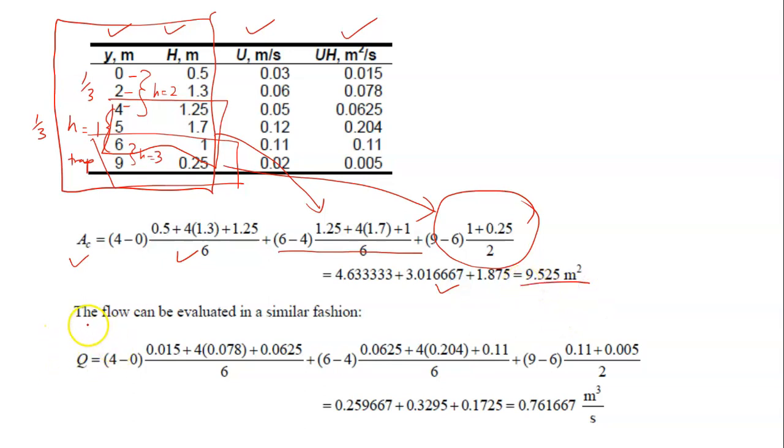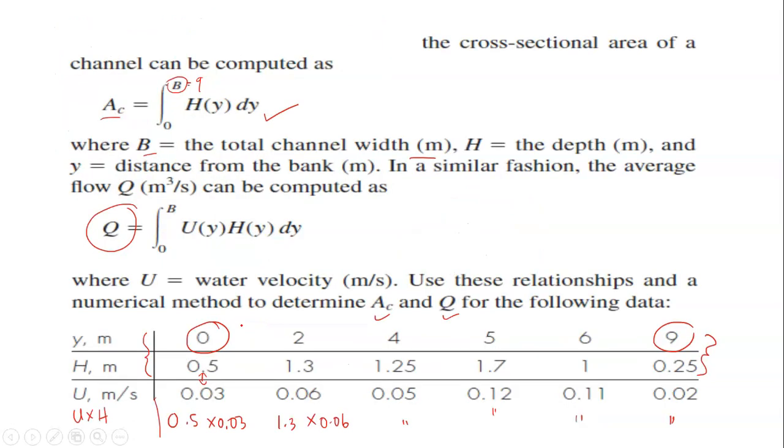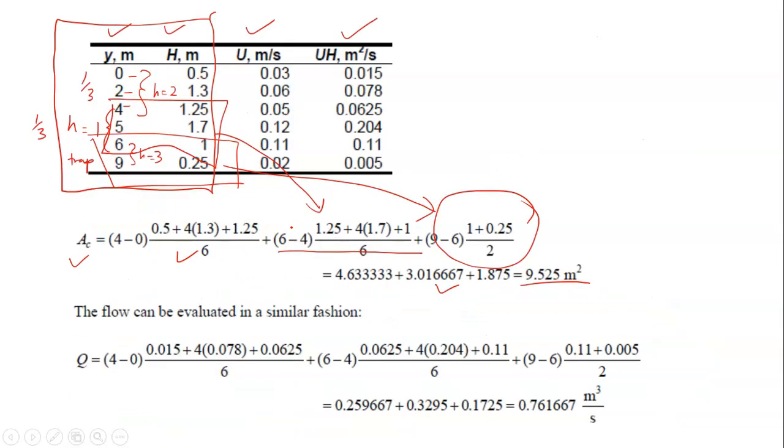And for the second part, to calculate the flow rate, you look at the question again. You need to integrate from 0 to 9, the UH over Y, so you need to integrate this column and this column.